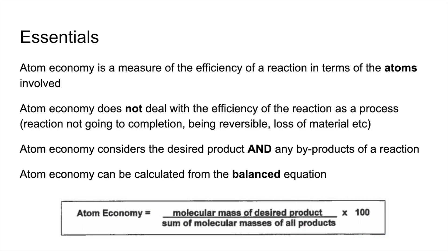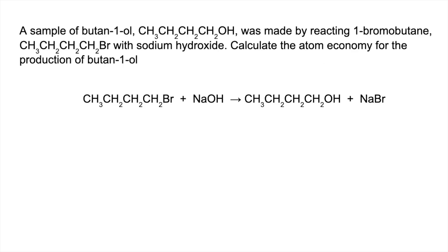I'm going to use the first version of the equation in all of the calculations that we're going to look at now. So here's the first one. It's about making butane-1-ol from the reaction with one bromobutane and sodium hydroxide.